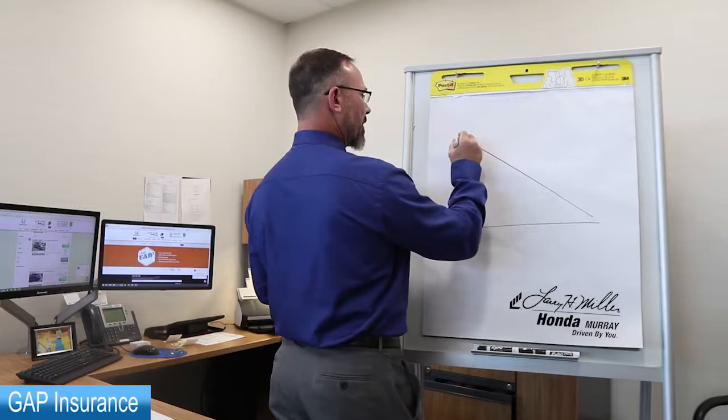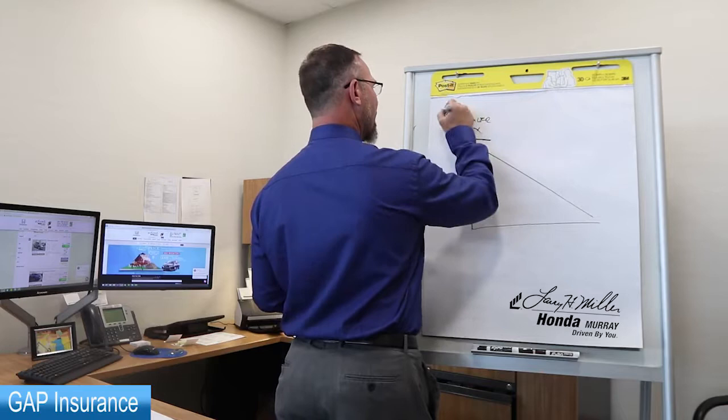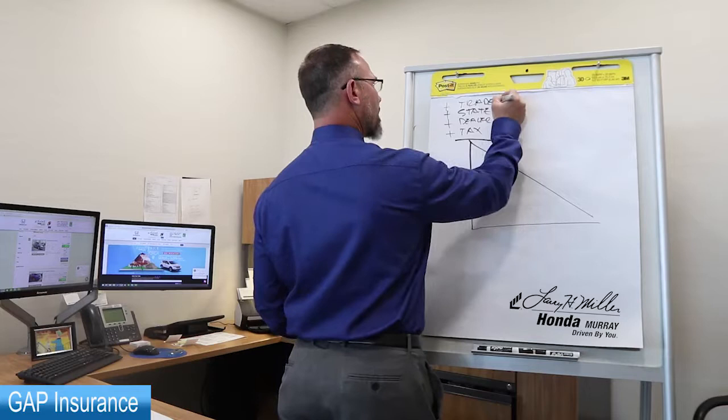You purchase the vehicle and your sales price is right here. You add tax, you add dealer fees, you add state fees. You may even add a negative equity on a trade-in. Now your purchase price is up here.